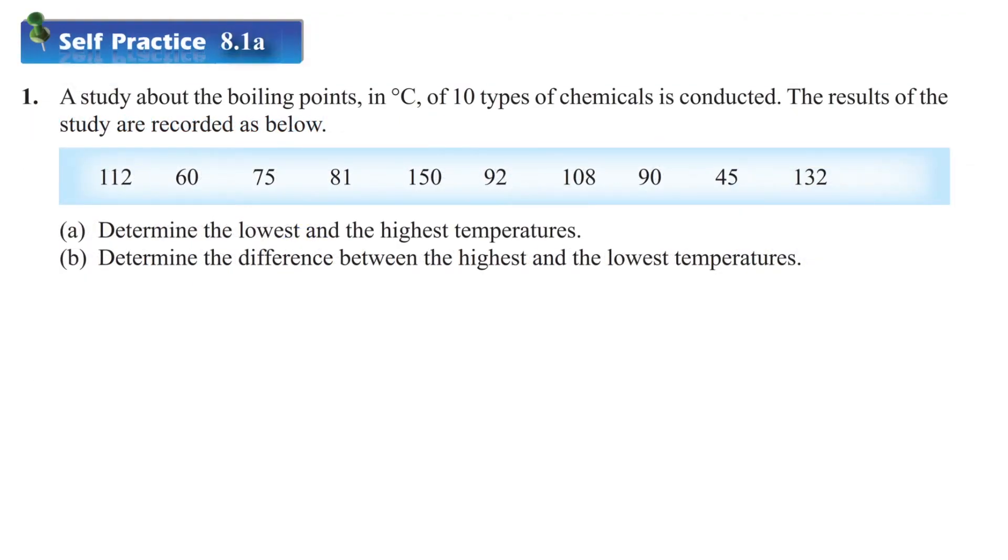Self-Practice 8.1a Number 1: A study about the boiling points in degree centigrade of 10 types of chemicals is conducted. The result of the study is recorded as below. Determine the lowest and the highest temperatures. The lowest temperature is 45. The highest temperature is 150. So, the difference is 150 degree centigrade minus 45 degree centigrade and is equal to 105 degree centigrade.